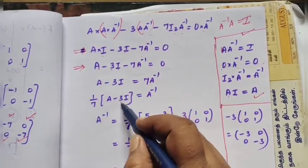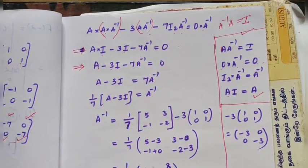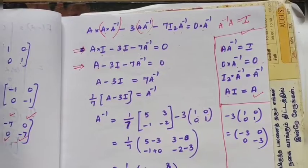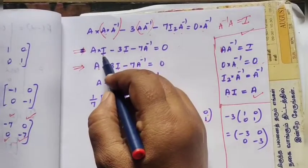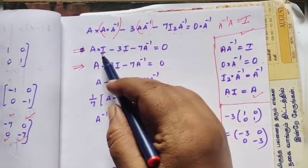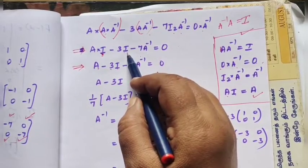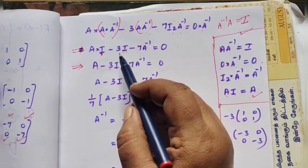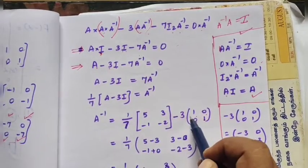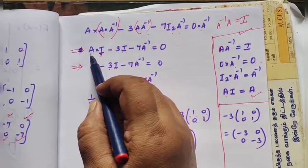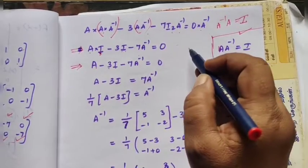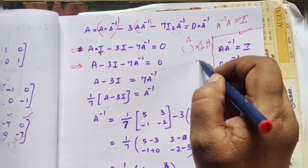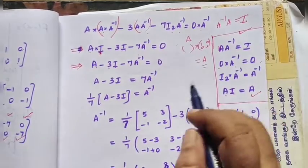3 into I. I value is 1, 0, 0, 1. Here we have I value 1, 0, 0, 1. This is the unit matrix. Here we have A multiplied by the unit matrix. Then we have A times the unit matrix. This is the same.